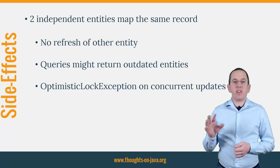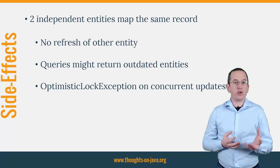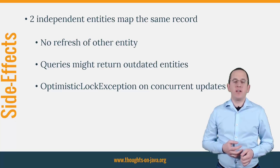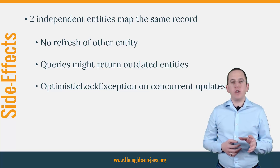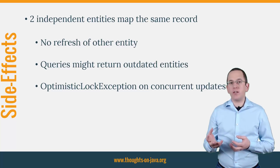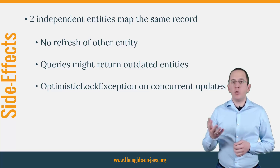The third issue is that Hibernate handles the Author and AuthorShort entities independently of each other. Hibernate will throw an optimistic lock exception if you update an AuthorShort and an Author entity that map the same database record within the same transaction.